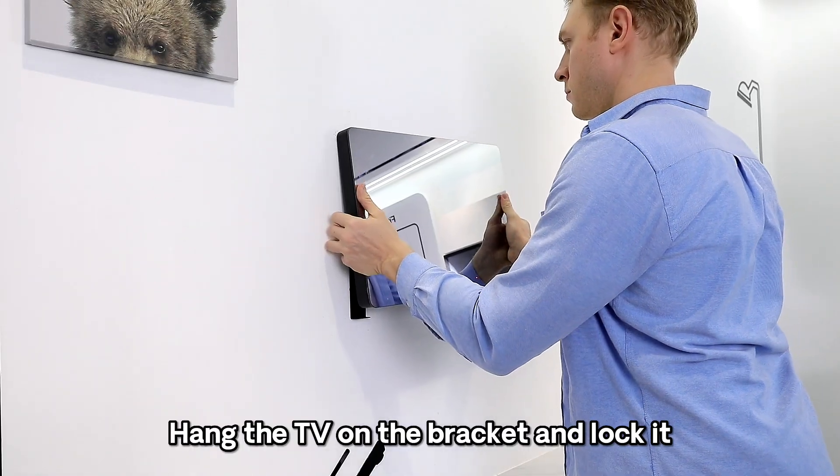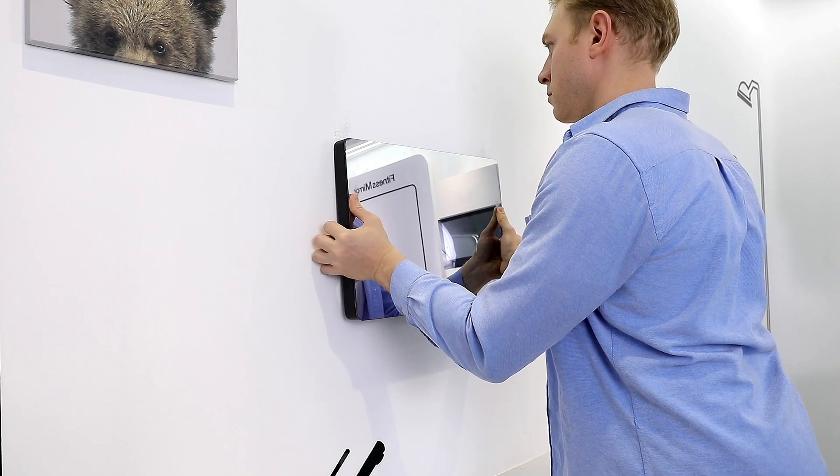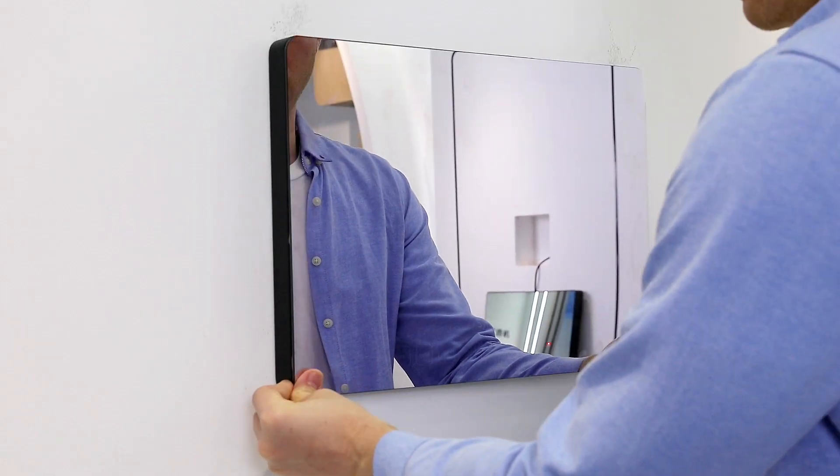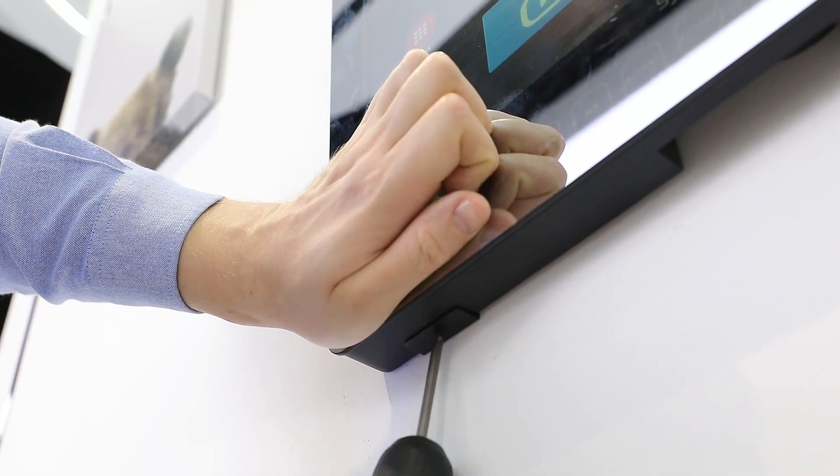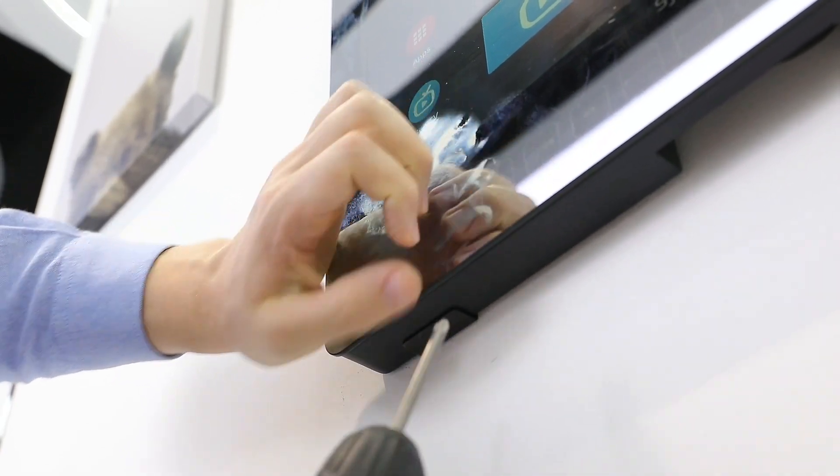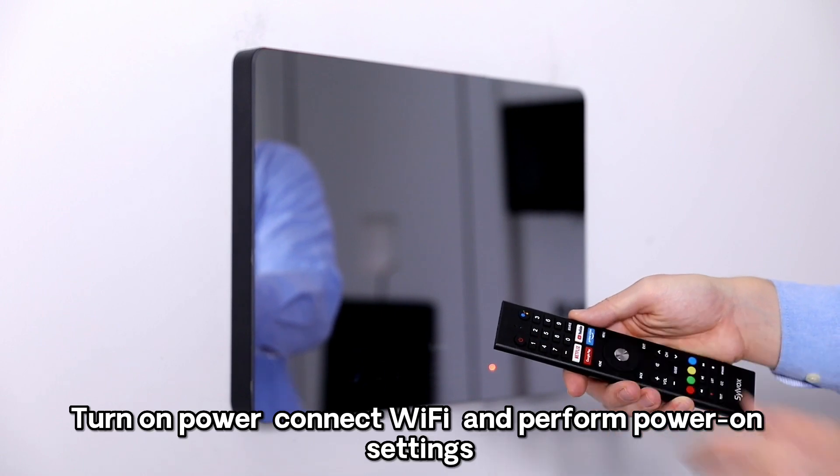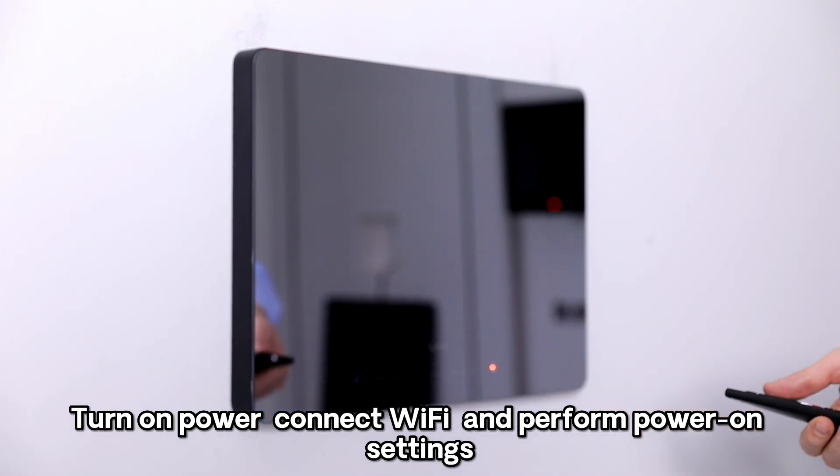Hang the TV on the bracket and lock it. Turn on power, connect Wi-Fi, and perform power on settings.